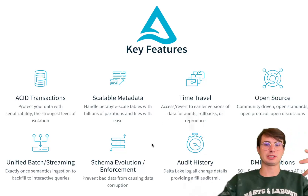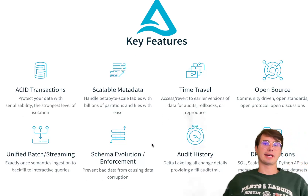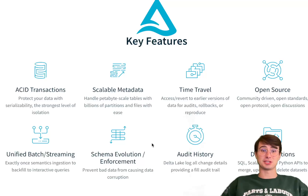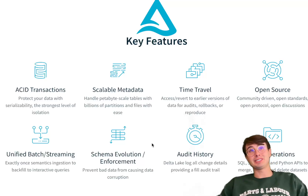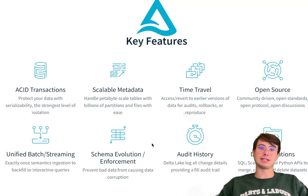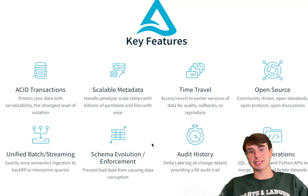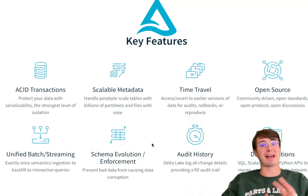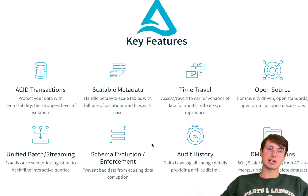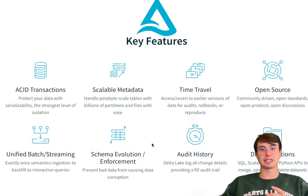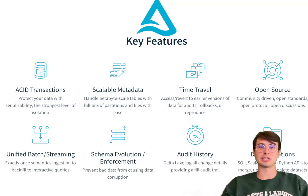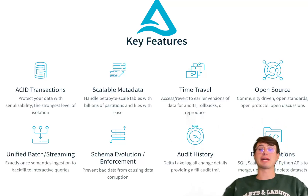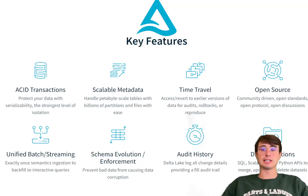Another way Delta Lake enforces reliability is through schema enforcement, which ensures that all data written to the lake adheres to a predefined structure. This is actually kind of unique in the data lake ecosystem, because a lot of times there's no schema enforcement — that's kind of the point of a data lake. But with schema enforcement, Delta Lake helps prevent data inconsistency and makes it easier to maintain data quality over time, though you may need to do a little more pre-processing to make your data compatible.